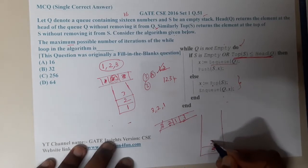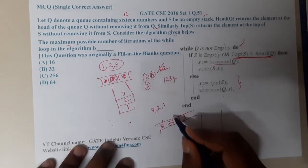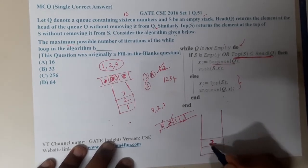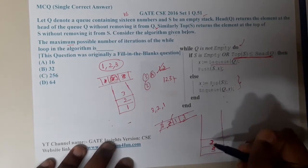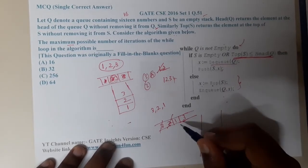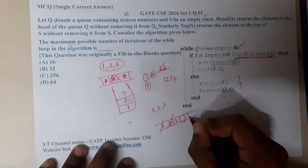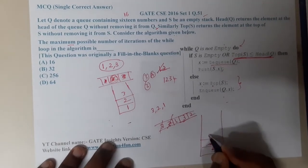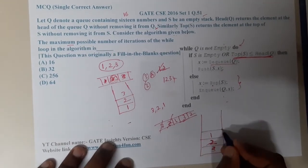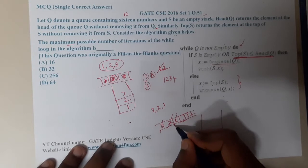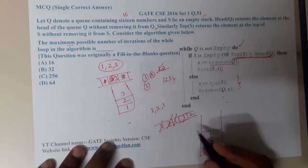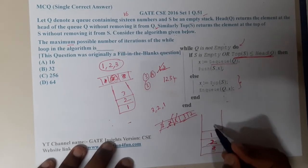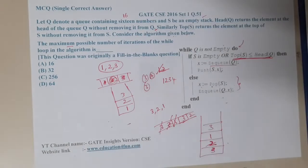The process continues: 2 is pushed onto the stack, then since top (2) is greater than head (1), 2 is popped and enqueued. After 1 is dequeued, 3 is compared again. Eventually, the algorithm satisfies the condition and pushes elements in order. So one is placed first, then two, then three.